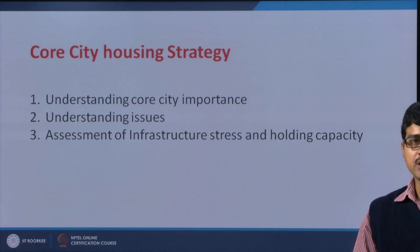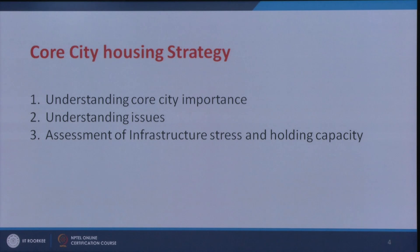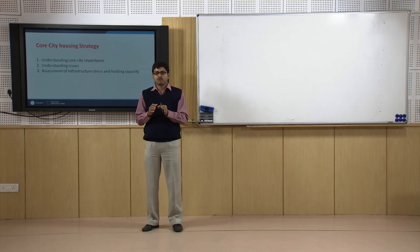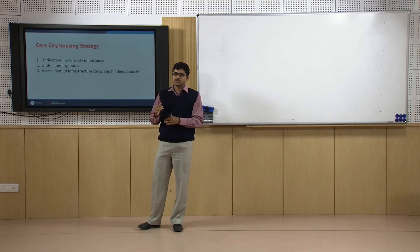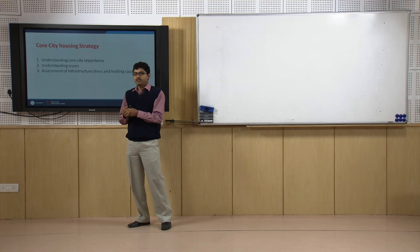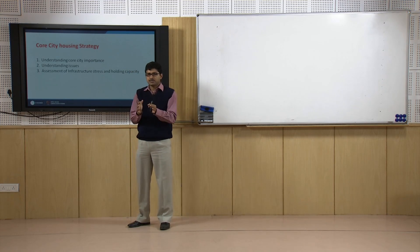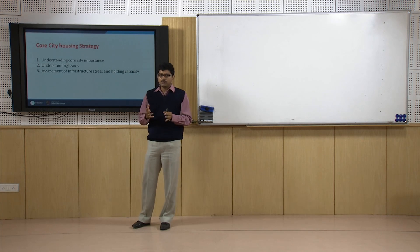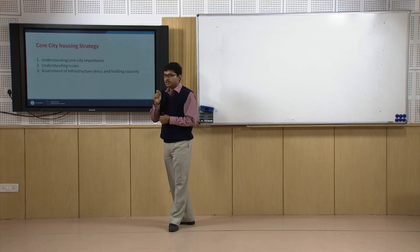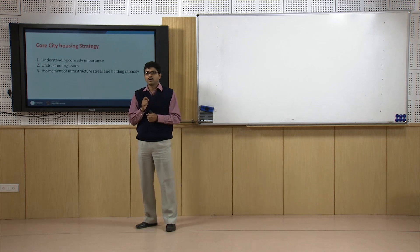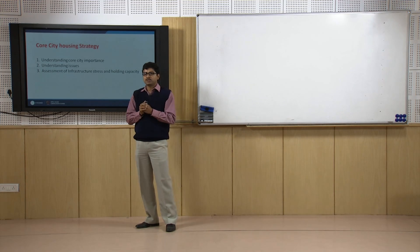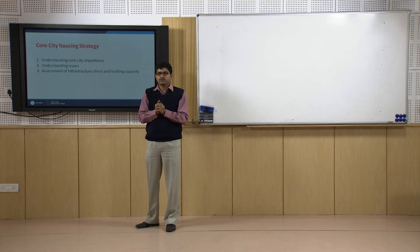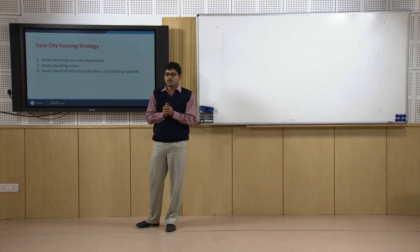What to do with core city housing? Now it is time to make an infrastructure assessment — how much infrastructure is presently there. Some data you will find from the municipal office on infrastructure levels like water supply and other facilities. You can assess the infrastructure level and compare it based on norms and standards to find the existing level of infrastructure provision per capita or per family. The key decision is whether we are going to further densify this area or reduce the density, since it is compact and congested — that is the very important question we have to deal with for core cities.